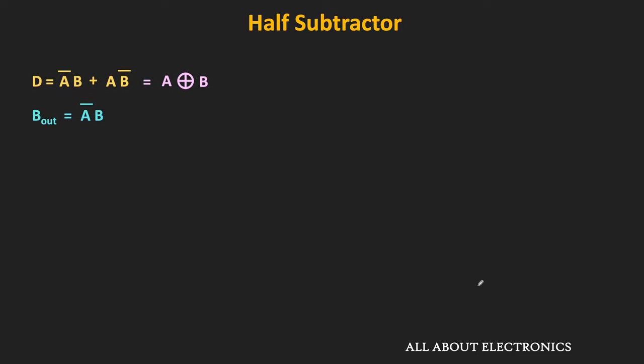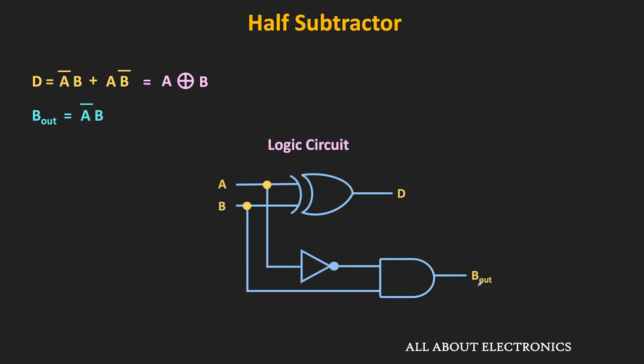So based on these Boolean expressions, now let us see the logic circuit of this half subtractor. So this is the logic circuit of the half subtractor. As you can see, A XOR B is implemented using this XOR gate. And to generate the A_bar·B signal, A is inverted using the NOT gate, and then the output is given to this AND gate — that means the output of this AND gate is equal to A_bar·B. So in this way, we can design this half subtractor.